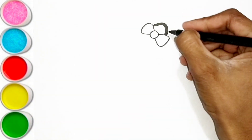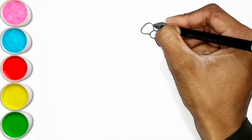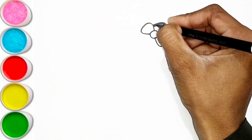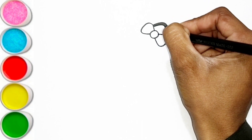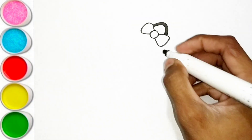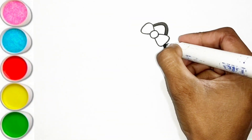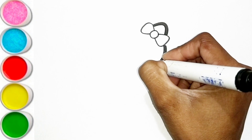E is for Elephant, E-E-Elephant. F is for Frog, F-F-Frog. G is for Goat, G-G-Goat. H is for Hand, H-H-H-Hand.